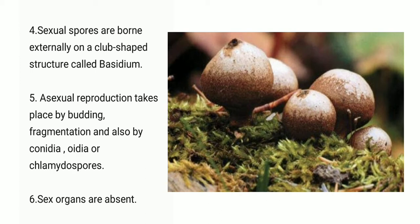A club-shaped structure is known as the basidium. Point five: asexual reproduction takes place by budding, fragmentation, and also by conidia, oidia, or chlamydospores. Conidia are the non-motile spores.